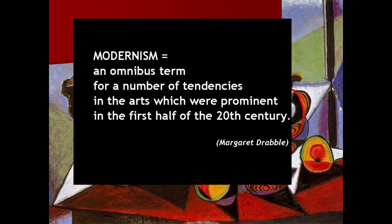Another definition: modernism as an omnibus term, an umbrella term for a number of tendencies in the arts which were prominent in the first half of the 20th century. This is by Margaret Drabble, and it sets the time right, because indeed the first half of the century is generally acknowledged as the chronology or time frame for modernism.